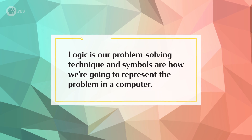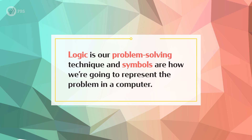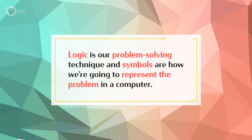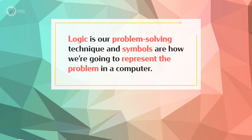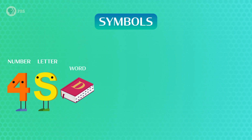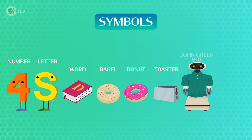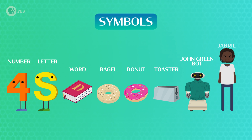To recap, logic is our problem-solving technique, and symbols are how we're going to represent the problem in a computer. Now, symbols can be anything in the universe: numbers, letters, words, bagels, donuts, toasters, John Greenbots, or Jabrils.